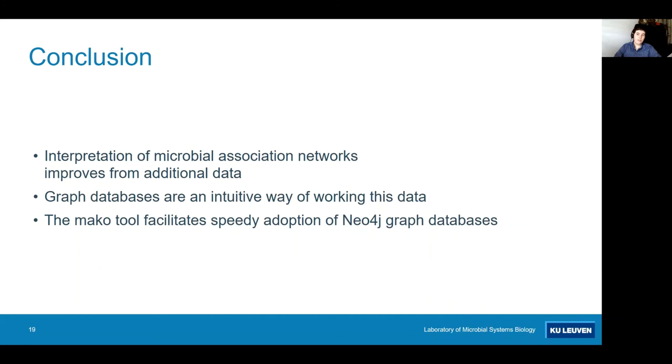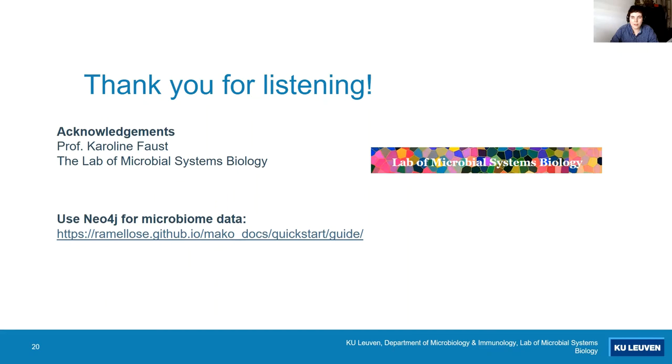So to conclude, the interpretation of microbial association networks improves from the inclusion of additional data. And graph databases are an intuitive way of actually working with this data, both for storing it, but also for their analysis. The Mako software tool that I developed facilitates the speedy adoption of Neo4j graph databases by rapidly populating these databases and by supporting reproducible downstream analysis.